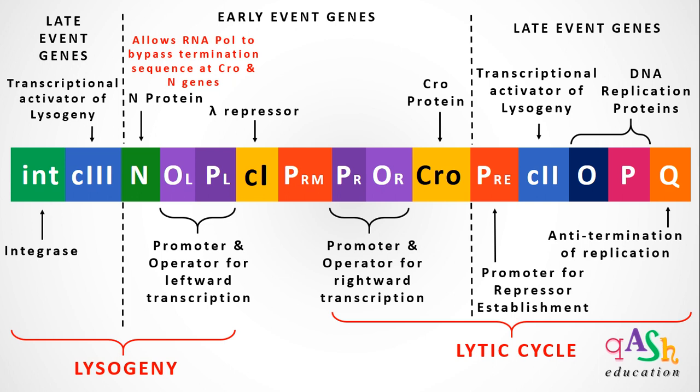Two other promoters — PRE, the promoter for repressor establishment, and PRM, the promoter for repressor maintenance — are both required for the maintenance and establishment of lysogeny. This is where the lambda repressor will bind and initiate transcription of the lambda repressor protein, thereby establishing lysogeny.